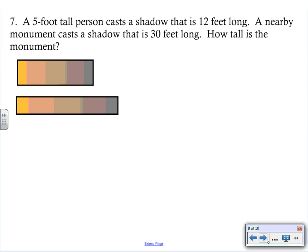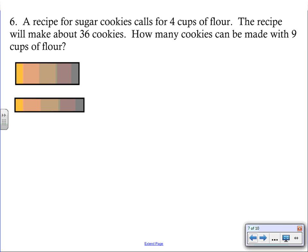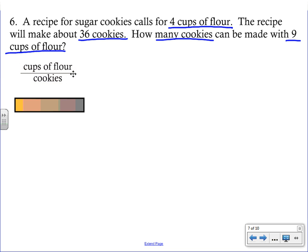Let's take a look at another problem. This time we're looking at sugar cookies. It says a recipe for sugar cookies calls for 4 cups of flour. The recipe will make about 36 cookies. So just looking at these first two sentences, it looks like we're comparing cups of flour to cookies. Then the question says, how many cookies can be made with 9 cups of flour? We always kind of have four things and three of the things we're going to know. We're going to start with our ratio.